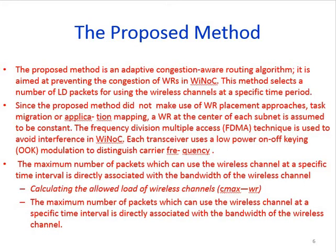The proposed method is the adaptive congestion-aware routing algorithm. It is aimed at preventing congestion of the wireless router in the wireless network on chip. This method selects a number of long-distance packets for using the wireless channels at a specific time period. A wireless router at the center of each subnet is assumed to be constant. Frequency division multiplexing (FDMA) is used to avoid interference in the wireless network on chip.